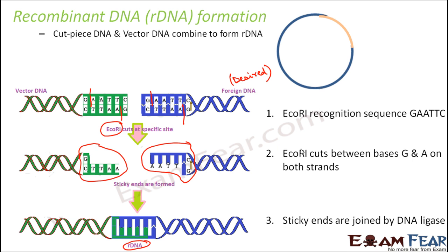The steps involved in recombinant DNA formation are: first, EcoRI recognizes its recognition sequence; then it cuts between bases G and A on both strands, forming sticky ends. The sticky ends combine because they are complementary. DNA ligase acts as the glue, sticking the two sticky ends together permanently. This is how rDNA formation takes place.